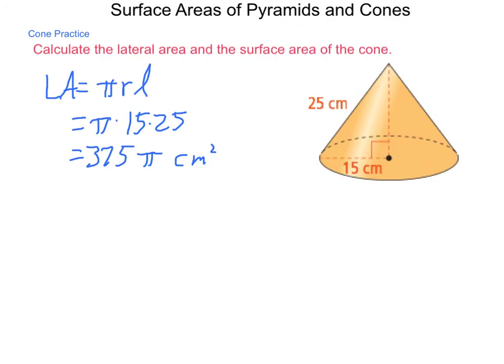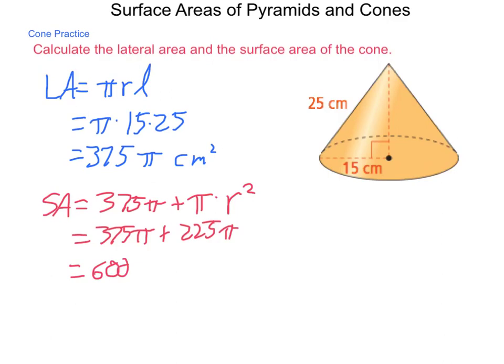Now if we want the total surface area, what we do is we take our 375 pi, and we add in the area of the base, which is another pi times radius squared. So we have 375 pi plus 225 pi. 15 squared is 225. Add these together, and we come out with 600 pi centimeters squared for that total surface area.